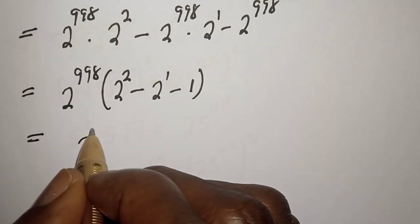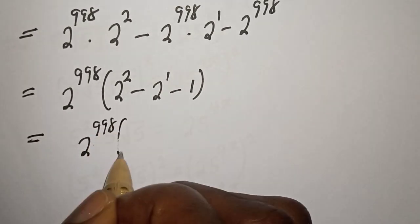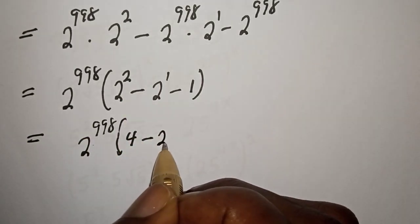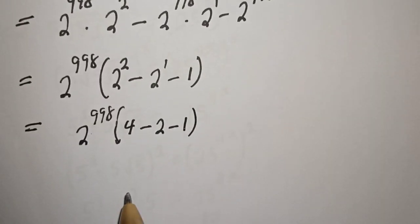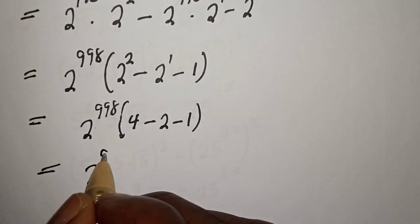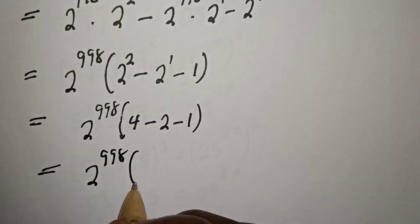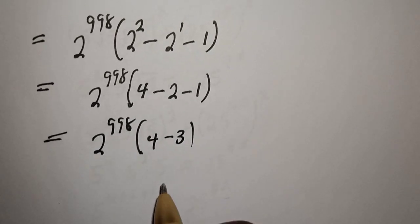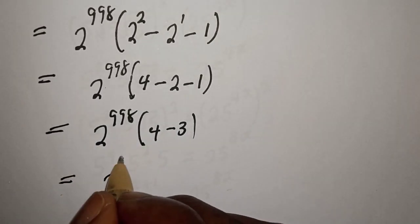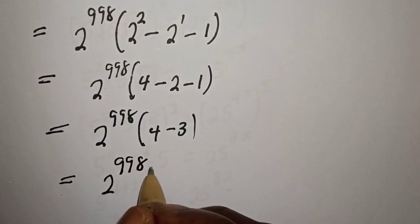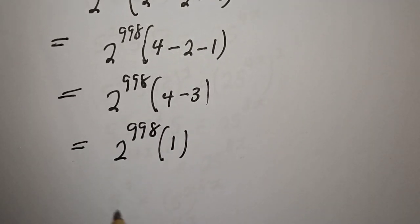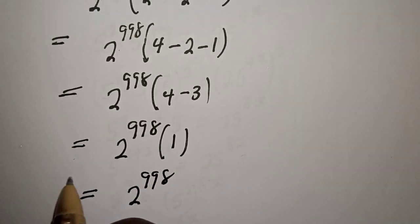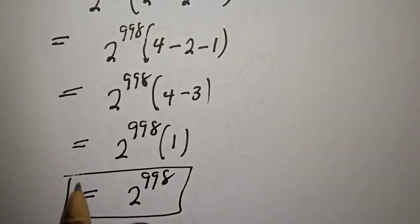Equal to 2 raised to power 998, bracket: 2 squared is 4, minus 2 raised to power 1 which is 2, minus 1. This simplifies to 2 raised to power 998 multiplied by 1, which equals 2 raised to power 998. And this is the final answer.